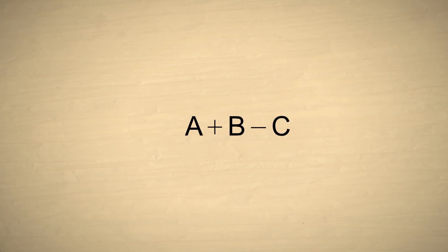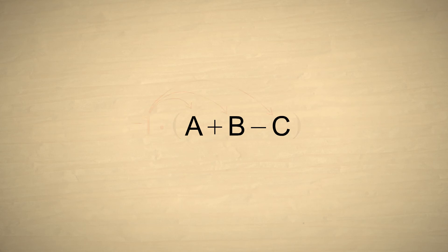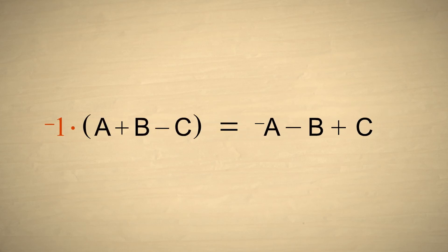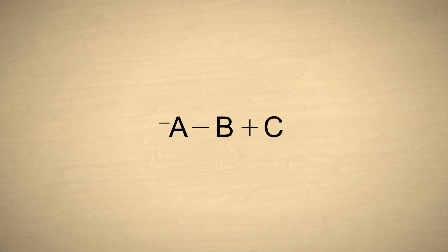Now, let's say that we have a sum of several numbers of various signs. If we enclose the sum in parentheses and multiply by negative 1, the distributive property says that this is the same as multiplying each number individually by negative 1, which switches the sign of each number. So, multiplying a sum of numbers in parentheses by negative 1 switches the sign of each number. Instead of multiplying by negative 1, we could just put a negative sign in front of the parentheses, which means exactly the same thing. So, a negative sign in front of the parentheses has the same effect as switching the sign of each number summed in the parentheses.